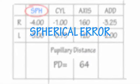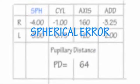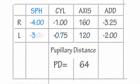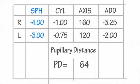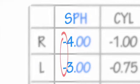Next we have SPH, which means spherical error. Don't be put off by the word 'error' — all this simply means is how strong the lens needs to be to correct your vision. Below SPH you'll see a plus sign or a negative sign followed by a number. The plus sign means you're farsighted and the negative sign means you're nearsighted.